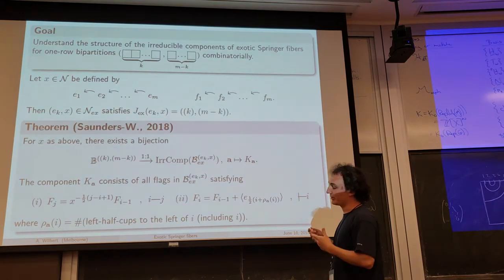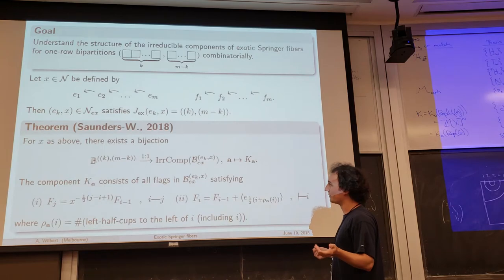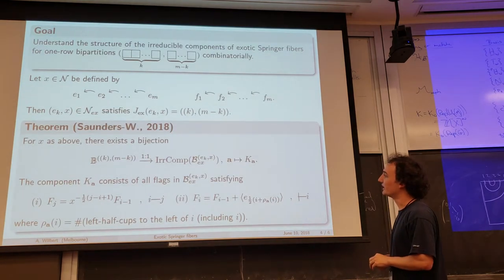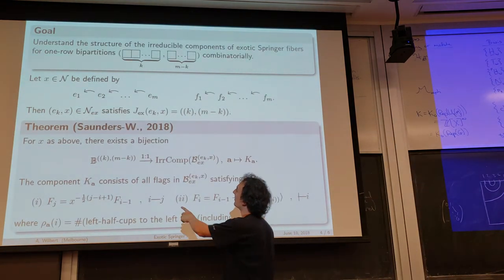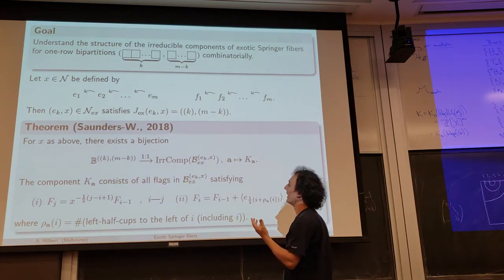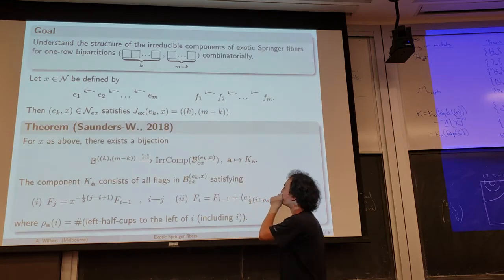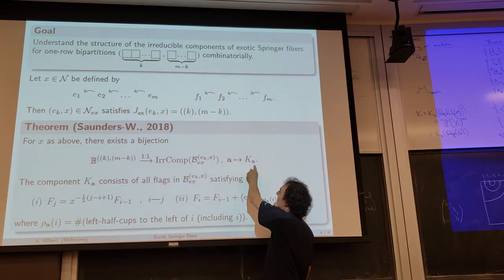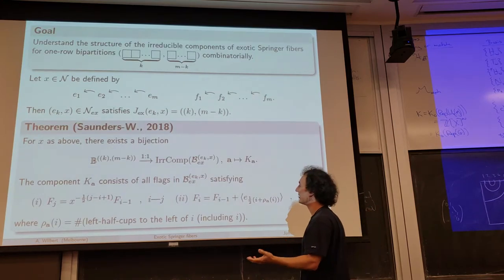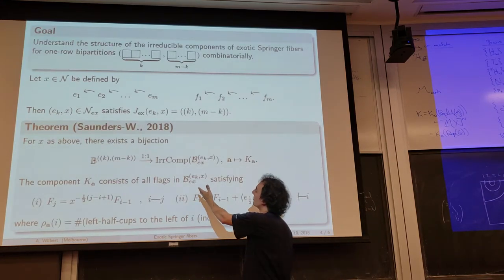This itself is not a big result because it basically just counts the irreducible components, and you could count them before — it's essentially contained in Kato's work. But the point why we want to parameterize them in terms of these cup diagrams is the second part. Given such a cup diagram A, I associate to it an irreducible component K_A. The point now is that these combinatorics explicitly describe these irreducible components.